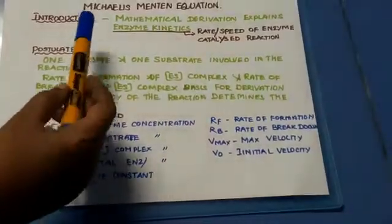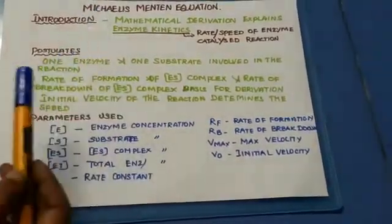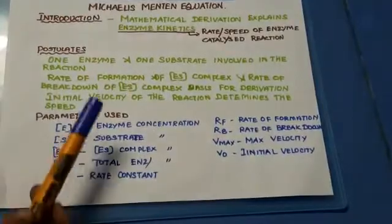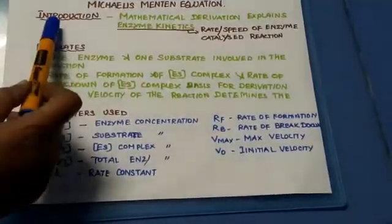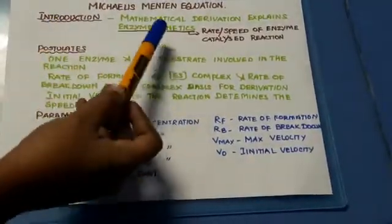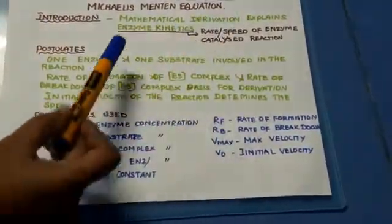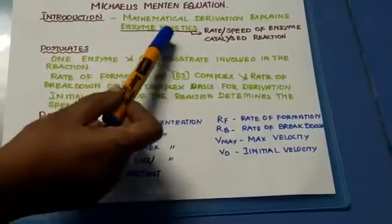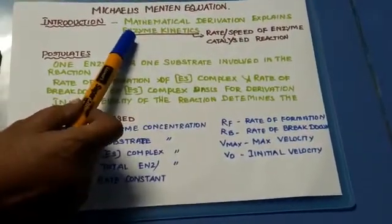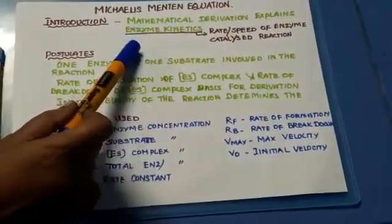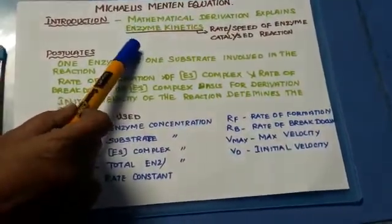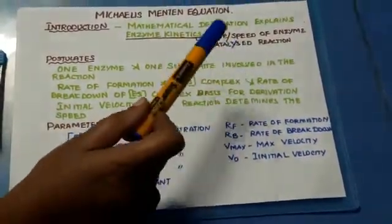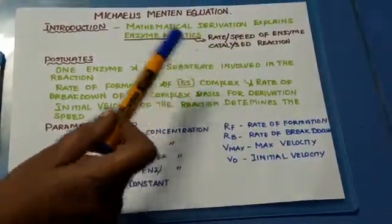Hi guys, today I am going to give an introduction to the Michaelis-Menten equation. This is a mathematical derivation that explains enzyme kinetics. Enzyme kinetics is nothing but the rate or speed of an enzyme-catalyzed reaction.